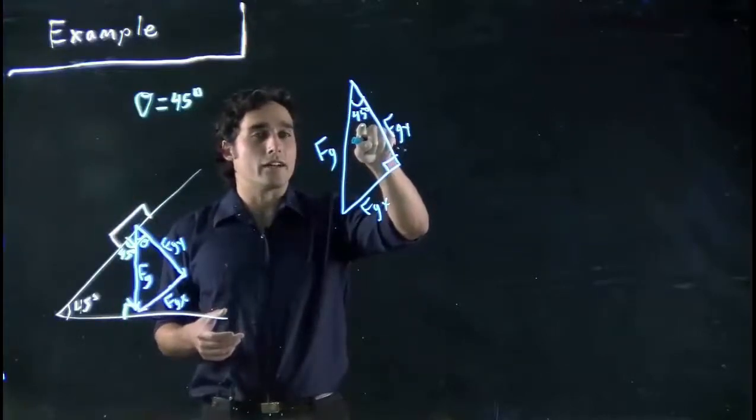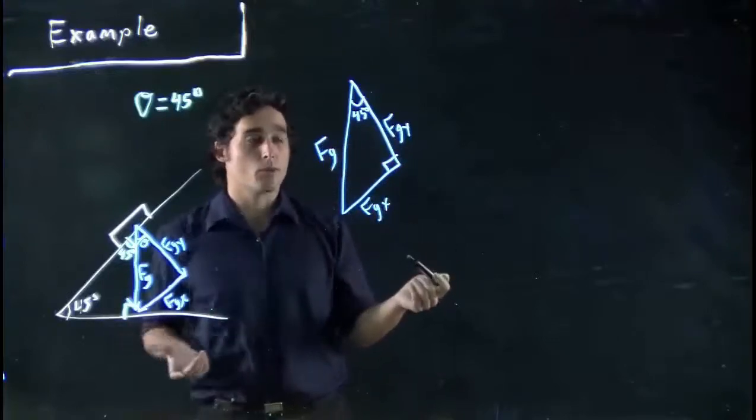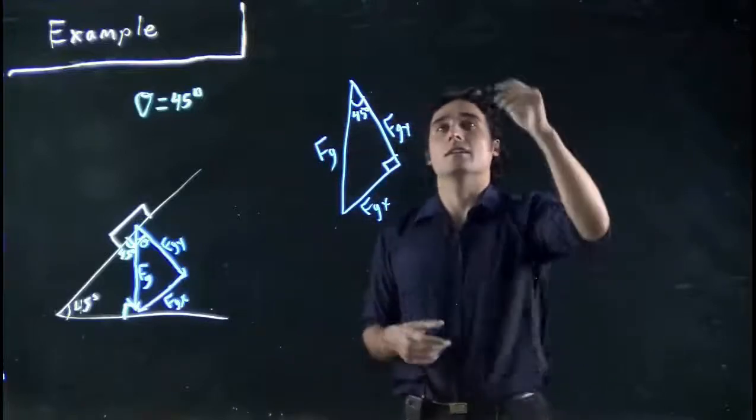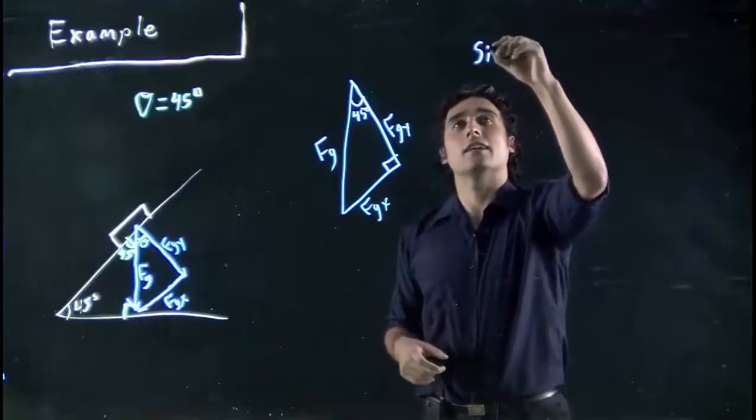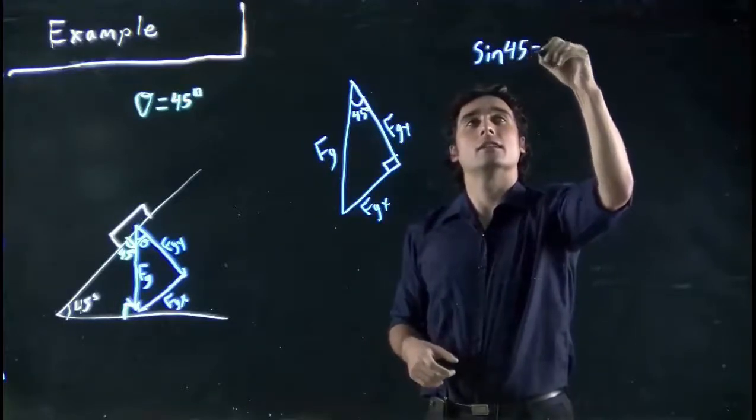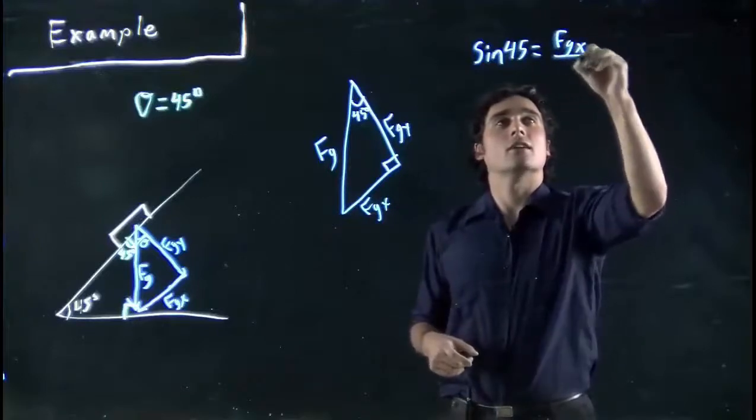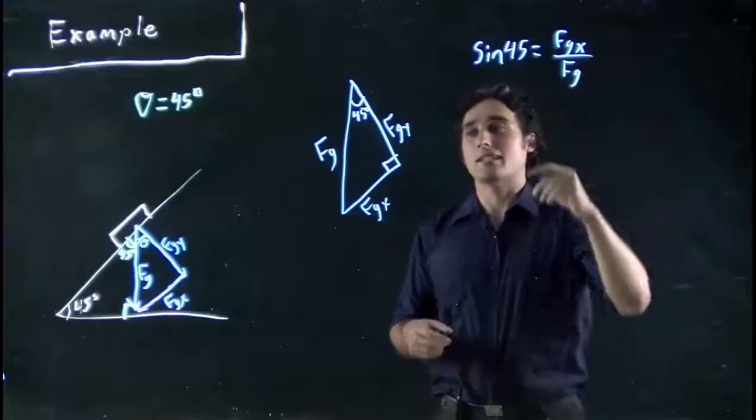So what do I got? I got the opposite from the angle and the hypotenuse. Which one is that? Well, we start going SOH-CAH-TOA. Ah, sine. SO. Opposite over hypotenuse.